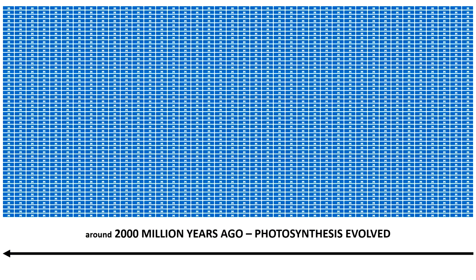Five hundred million years before this, bacteria had figured out photosynthesis. If we think about life on Earth, almost all of it depends on things that are green — things that take energy from the sun and turn it into something useful, almost always sugar. This is what photosynthesis is about: taking sunlight and turning it into a useful thing. This process changed life forever.